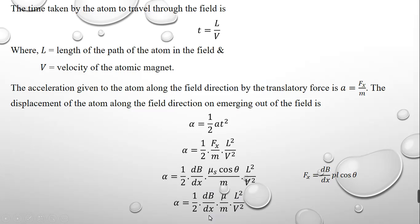If all these quantities are known, we can calculate the displacement or deviation produced by the dipole in the presence of a non-uniform magnetic field. On the other hand, if we know the deviation produced, we can also calculate the magnetic moment of the atomic dipole. This experiment was originally performed to determine the magnetic moment at different field strengths, and the results accidentally confirmed the existence of space quantization. So this is all about the theory of the Stern-Gerlach experiment. Thank you.